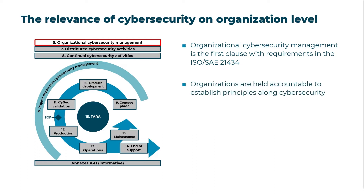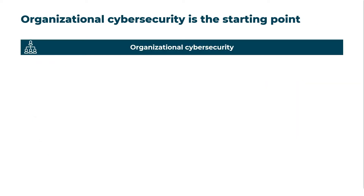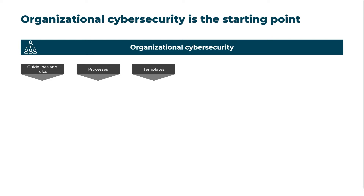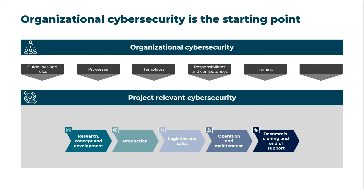This way, organizations are held accountable to establish the principles along cybersecurity. Furthermore, organizations need to ensure that certain activities are planned and existing for the work done on project level, and thus for the engineering activities. The work of the organization includes, for example, having sufficient guidelines, rules, and processes; that templates are available for project use; that responsibilities are assigned with sufficient experience and that competence is being managed; that training is provided to ensure sufficient know-how. Those topics are required to ensure that the project has the capability to fulfill its duties along the product life cycle.